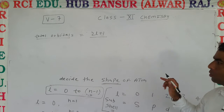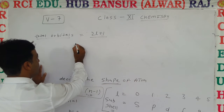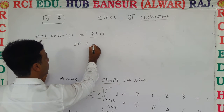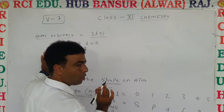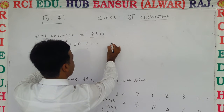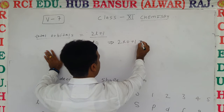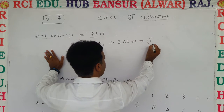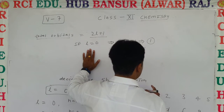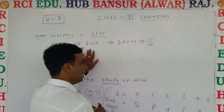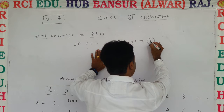If l = 0 (s sub-cell), then 2 × 0 + 1 = 1. So for the s sub-cell there is only one orbital. S sub-cell has only one orbital.